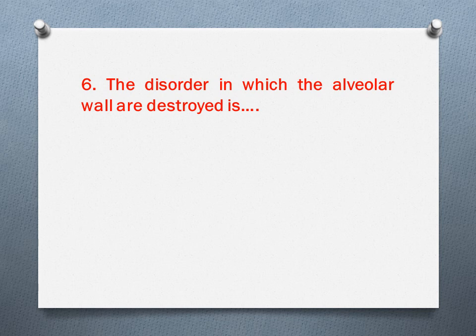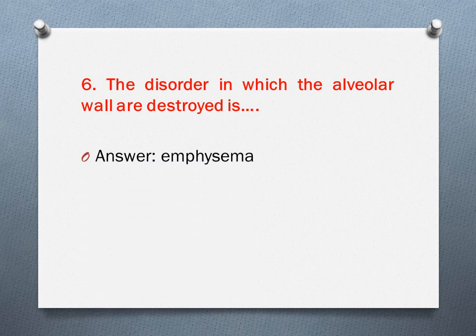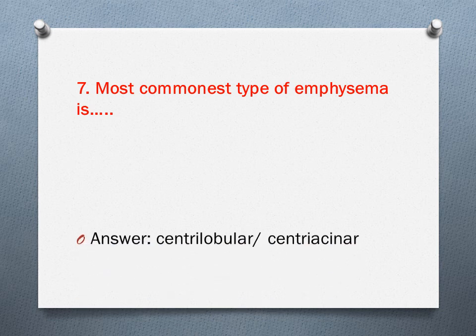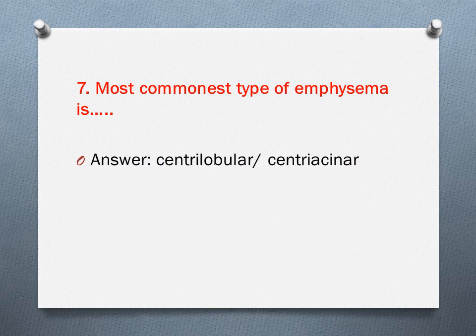Question six: The disorder in which the alveolar walls are destroyed is? The answer is emphysema — the disorder in which the alveolar walls are destroyed. Question seven: The most common type of emphysema is? The answer is centrilobular emphysema — centrilobular is the most common type of emphysema.